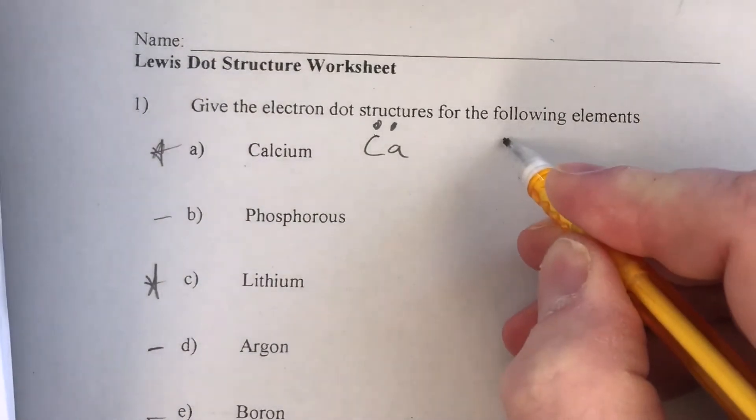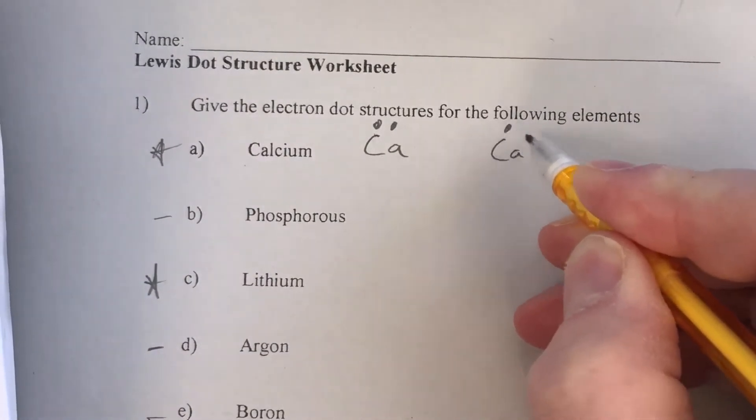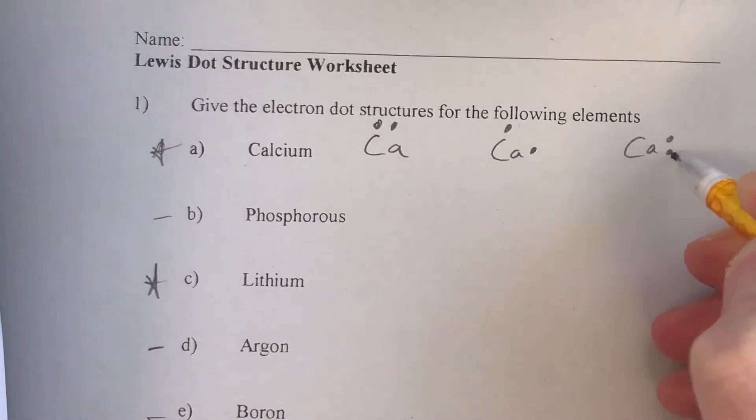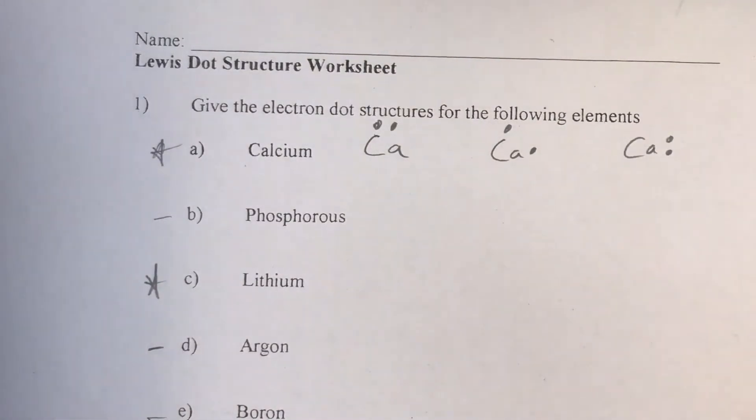So all we need to do is represent them with two dots. Sometimes you might see in some books they might put them separate from one another, maybe they'll put them both on the right side. There's really some leeway in here. A lot of it depends on when you're actually doing them with bonding, then that could play a role in how they're actually manipulated within the actual diagram, especially if you're going to lose electrons and gain electrons and form ions.